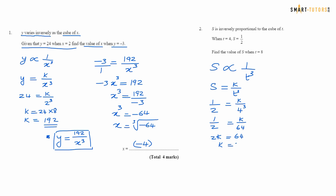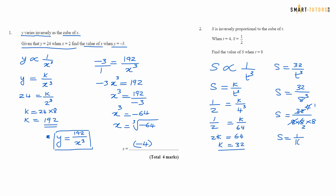So k equals 32. So s equals 32 over t cubed. Now find the value of s when t equals 8. So s equals 32 over 8 cubed. 8 cubed is 512. Simplifying: 32 over 512. 8 goes into 4, 4 goes into 1 and 2. So the answer is s equals 1 upon 16.